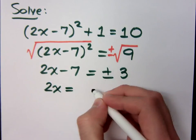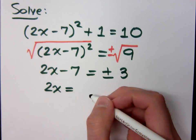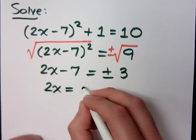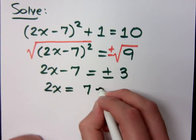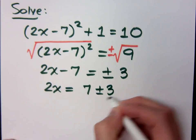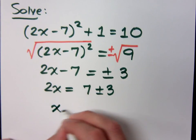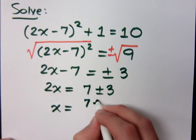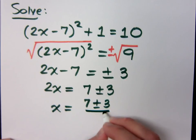Get x by itself, so I've got to move the 7 over. Where does it go? In front of the plus or minus. In front of the plus or minus. That's a positive 7. Plus or minus 3, and then do what? So I'm going to divide this whole thing by 2.